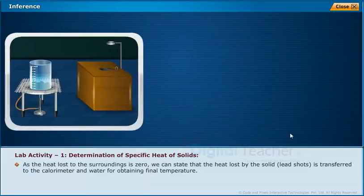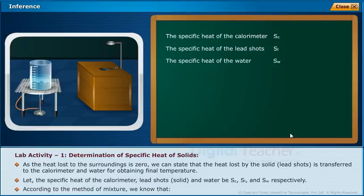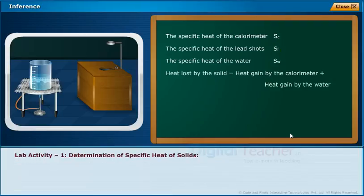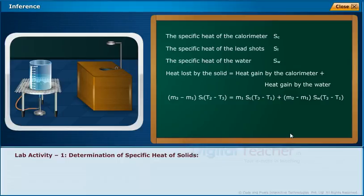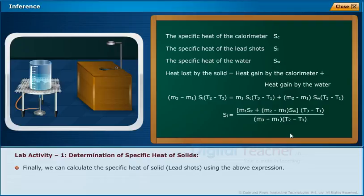Inference: As the heat lost to surroundings is zero, the heat lost by the solid lead shots is transferred to the calorimeter and water. Let the specific heat of the calorimeter, lead shots and water be Sc, Sl and Sw respectively. According to the method of mixtures: heat lost by solid = heat gained by calorimeter + heat gained by water. The equation is: (M3 - M2)·Sl·(T2 - T3) = M1·Sc·(T3 - T1) + (M2 - M1)·Sw·(T3 - T1). Therefore, Sl = [M1·Sc + (M2 - M1)·Sw]·(T3 - T1) / [(M3 - M2)·(T2 - T3)]. Using this expression, we can calculate the specific heat of the solid lead shots.